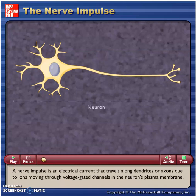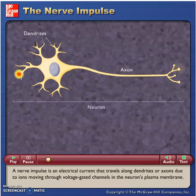A nerve impulse is an electrical current that travels along dendrites or axons due to ions moving through voltage-gated channels in the neuron's plasma membrane.